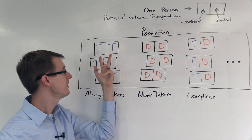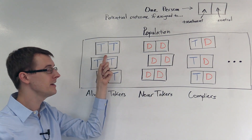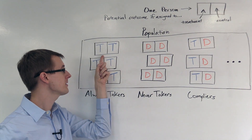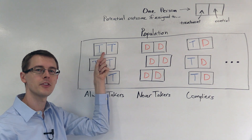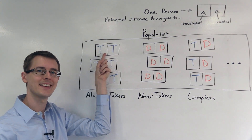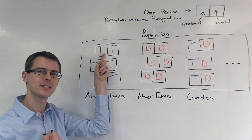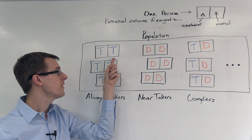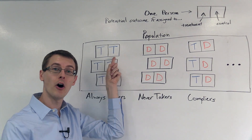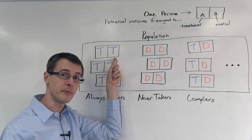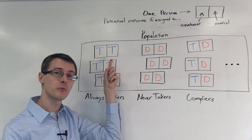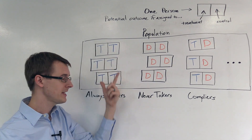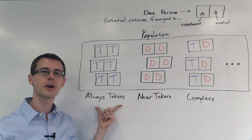So for example, this person right here — when they're assigned to the treatment group, they actually take the treatment. They get treated. When they're assigned to the control group, they also take the treatment. They also receive treatment. So this person is an always taker.